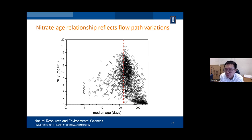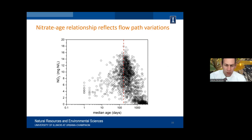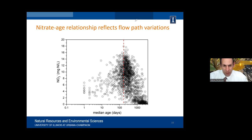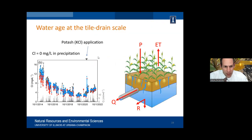A final question about the chloride data: was this a field where potassium chloride had been applied for a number of years before 2014, and then there was no application for a number of years — is that how that dilution happened? I don't know exactly — there was an owner change during that period. We believe the high initial concentration was due to past fertilizer input because we saw the jump in chloride right after the potassium application. The questioner noted being a little surprised since chloride typically moves pretty quickly through the system.